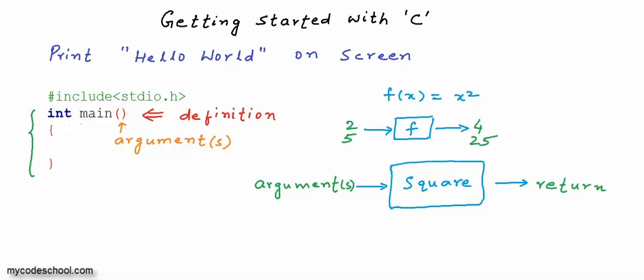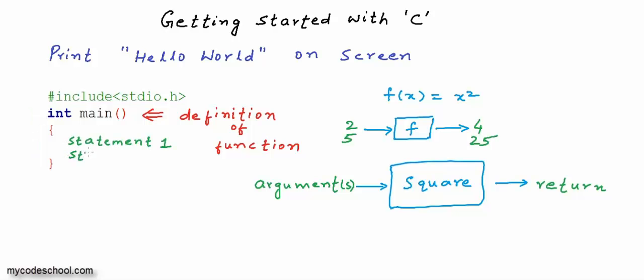This function has the name main, and right now there is nothing inside the parenthesis — inside the parenthesis you define what arguments the function will accept. A function may not need arguments, and sometimes may not return anything. After the definition of the function, we must have an opening curly brace, then we can have some statements to perform a task. We can have as many statements as we want, and after all the statements we must have a closing curly brace, which marks the end of the function. Whatever is between the opening brace and closing brace is the body of the function.